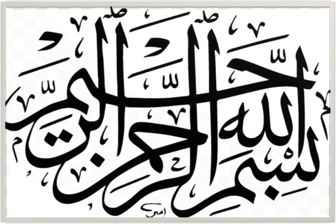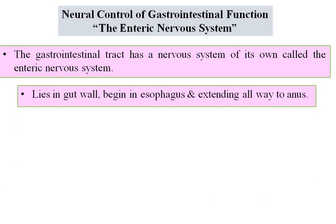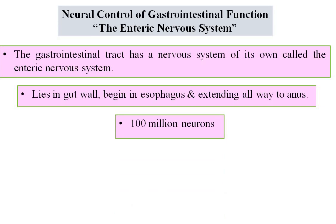Bismillahir Rahmanir Rahim. In this segment we will study the neural control of gastrointestinal function, that is the enteric nervous system. The gastrointestinal tract has a nervous system of its own called the enteric nervous system. It lies in the gut wall. It begins in the esophagus and extends all the way to the anus. It is composed of hundred million neurons.